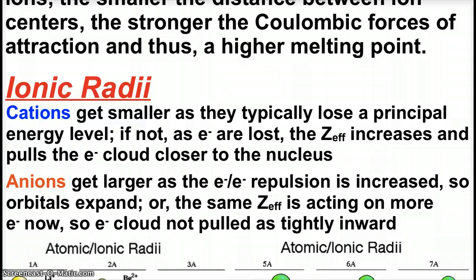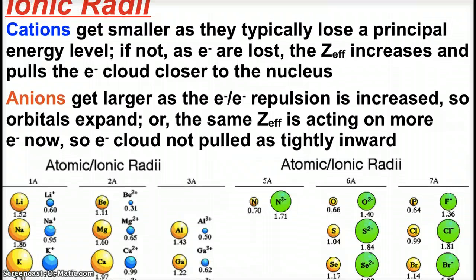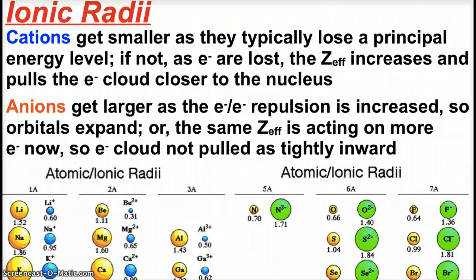Cations typically get smaller because they're losing electrons, usually the whole principal energy level. Even if they don't lose that whole principal energy level, it goes back to Zeff. When atoms lose electrons, the force of attraction of the nucleus is greater, pulls those electrons closer.